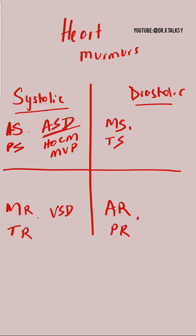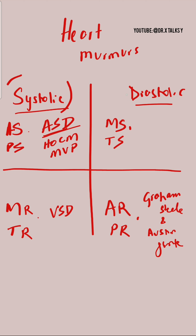And lastly, on the right lower quadrant, there are two named murmurs: Graham Steell and Austin Flint. So all murmurs on the left are systolic, and all the murmurs on the right are diastolic.